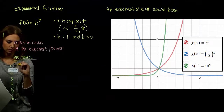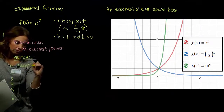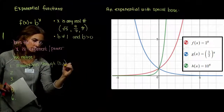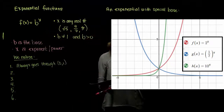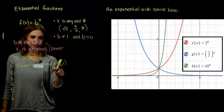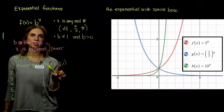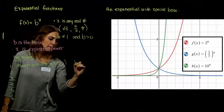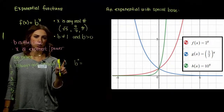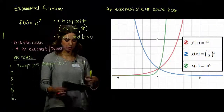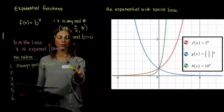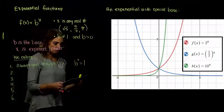So it always goes through the point (0, 1). When x equals 0, b raised to the 0 is always 1. The first has base 2, the second base 1/2, the third base 10 — but they all go through this point. Looking at b values greater than 1, like 2 to the x and 10 to the x, the graph is increasing from left to right.